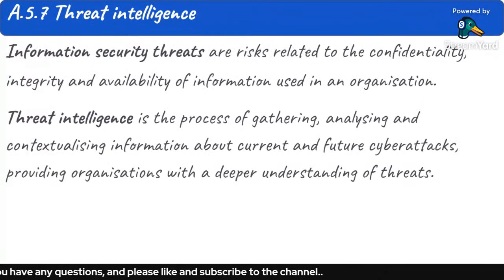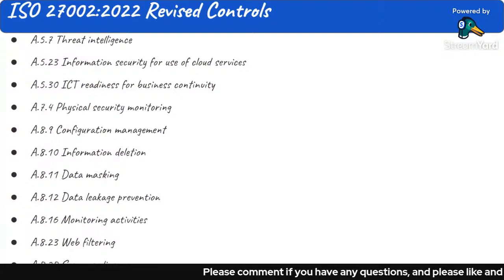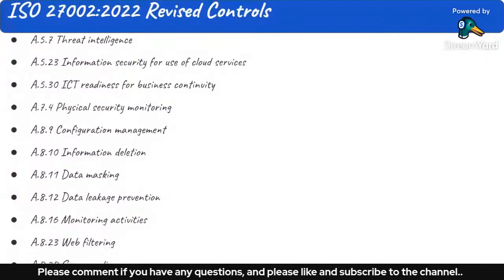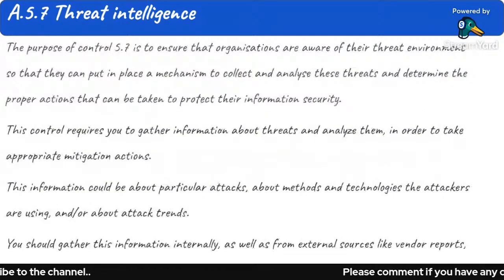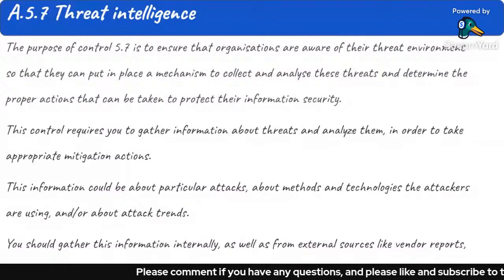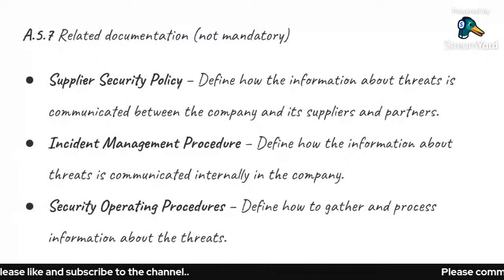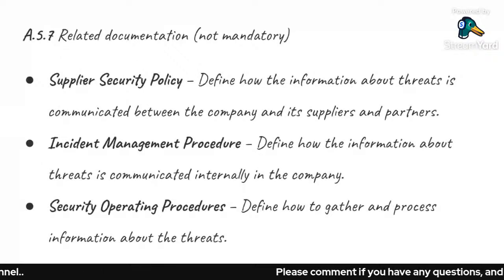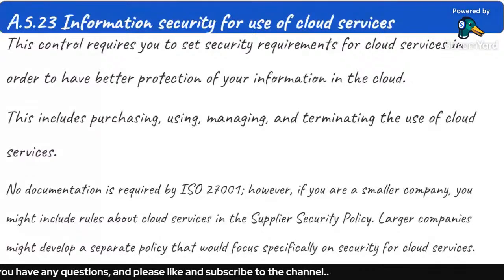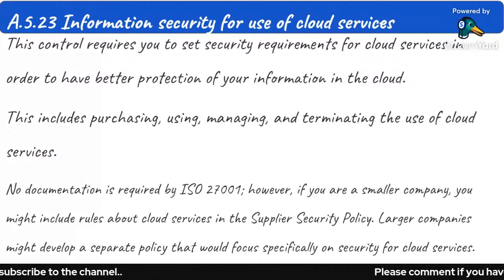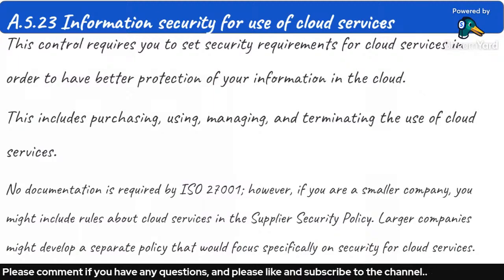In this video we discussed A.5.7 Threat Intelligence — one of the new controls in ISO 27002:2022. We covered what security threats are, what Threat Intelligence is, the purpose of this control, the organizational responsibilities, and related documentation. In the next video, we will discuss A.5.23, which covers information security for use of cloud services. Thank you for watching — feel free to subscribe and share the video.